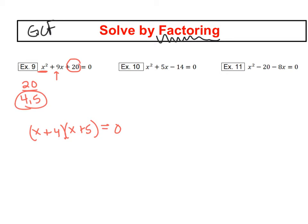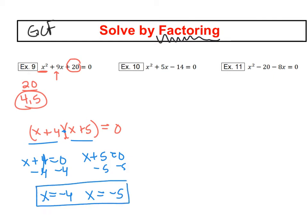But now that it's factored, like we saw in our intro video, you can set each factor equal to 0. So we're going to say x plus 4 equals 0, and x plus 5 equals 0. We'll go ahead and subtract 4 from both sides, and we get x equals negative 4, and subtract 5. So x equals negative 4, and x equals negative 5.